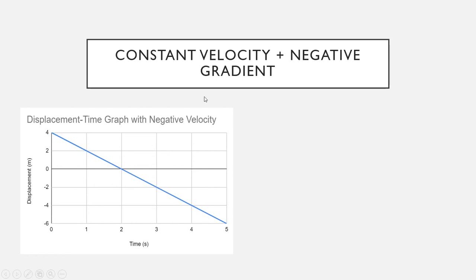Let's look at a case where we have a constant velocity, but we have a negative gradient. So this is our sloping downwards. And it's a very similar procedure. You're going to use the same formula. You're going to take a measurement, and it could be from anywhere. This is the most convenient, I find. So we're doing zero to two, and that's going to be a delta t of two seconds.